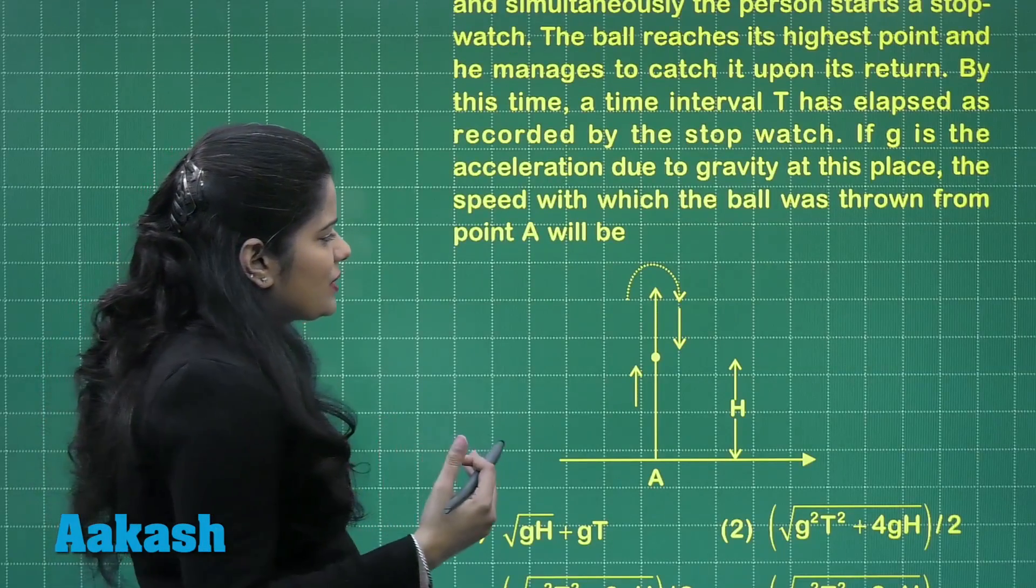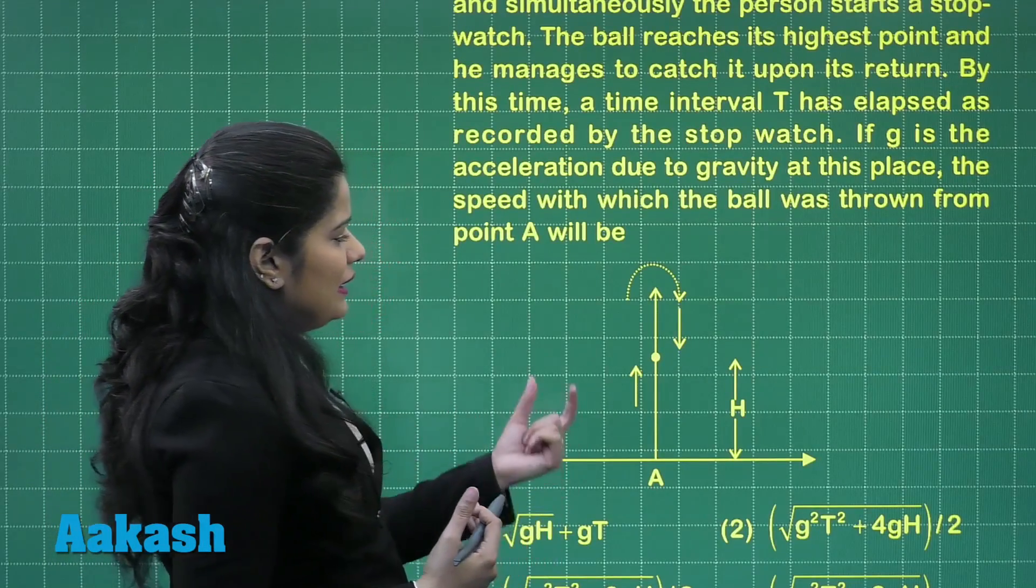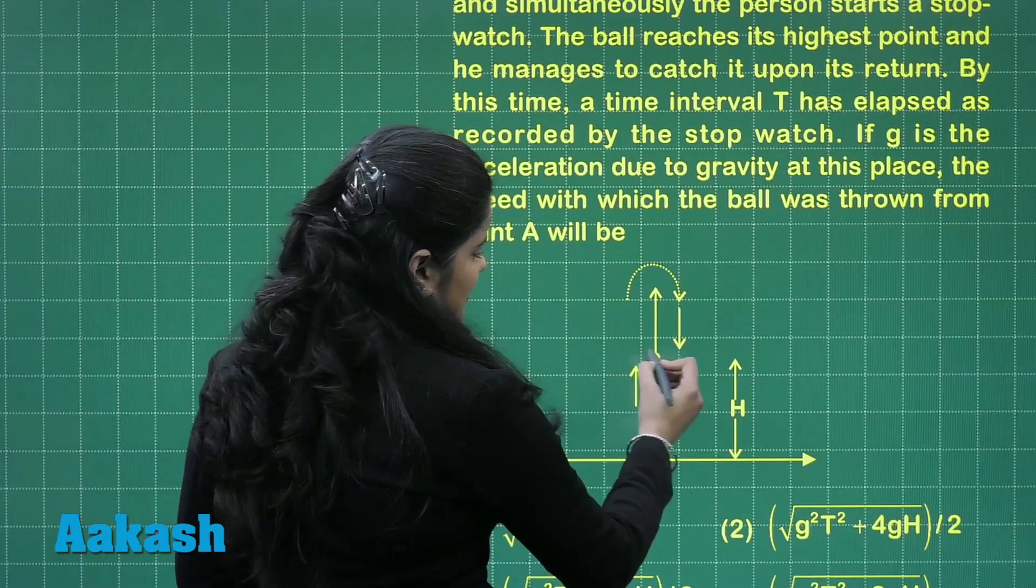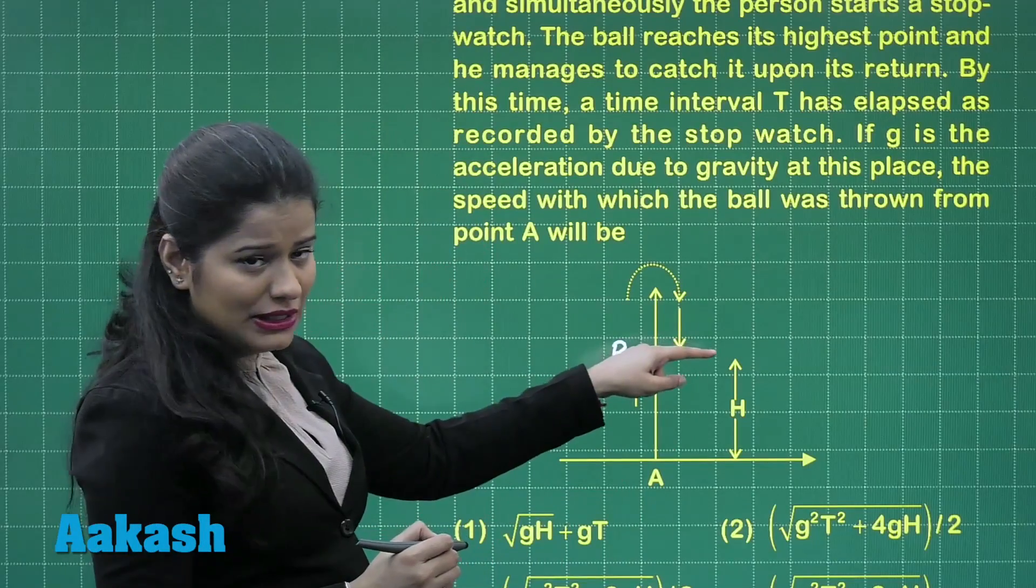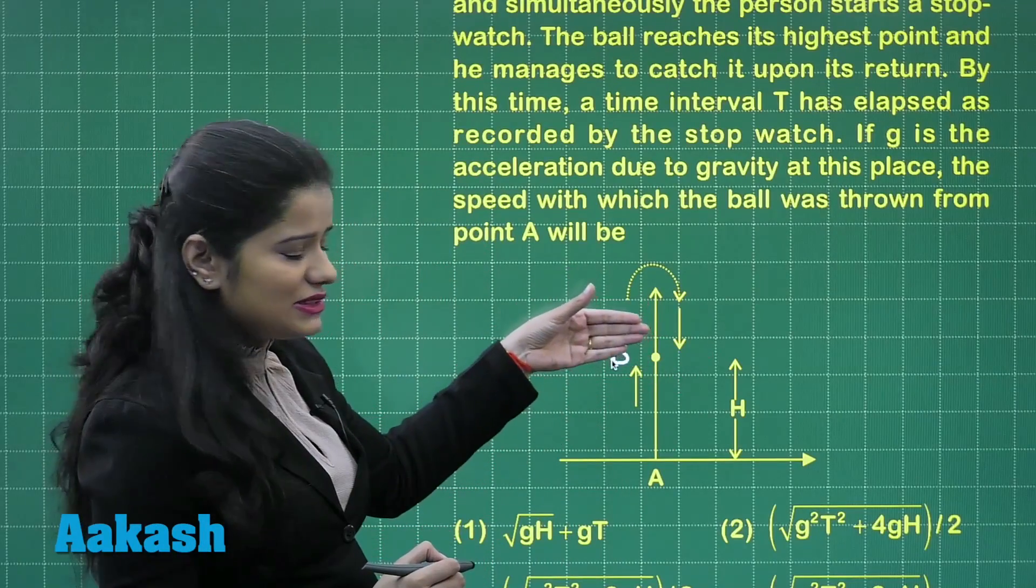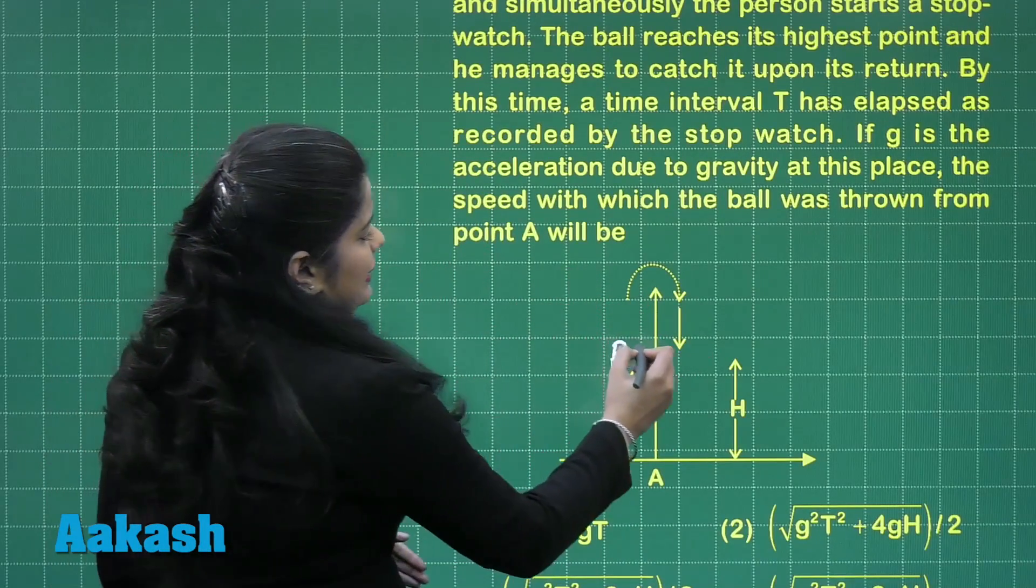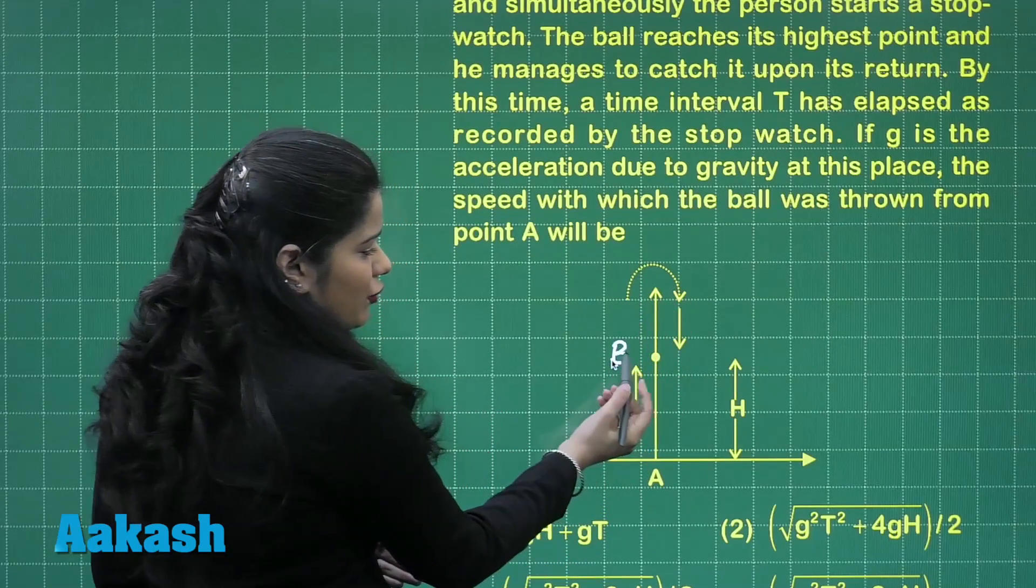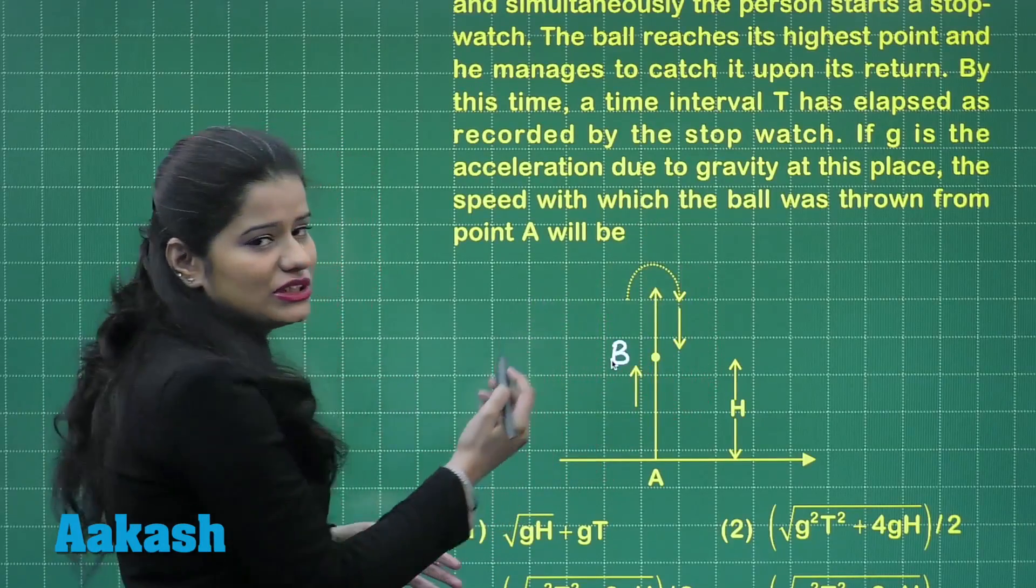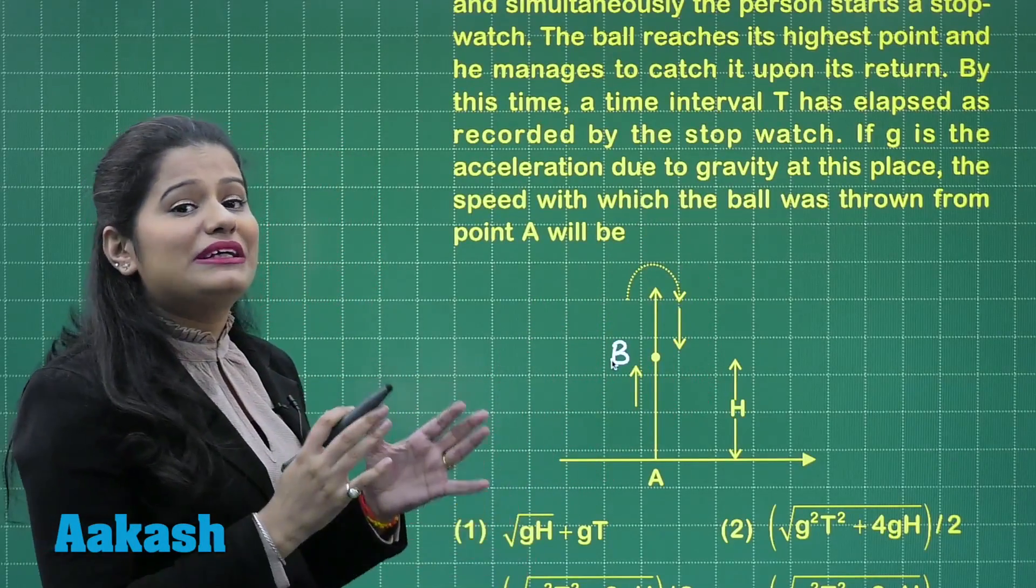Now here in the question it says that when the ball passes this point, let's mark this point as point B which is at a height H. There was a person who actually misses the ball here. Now, the time taken by the ball to go to the highest point from this point B and to come back to this point B is time T.